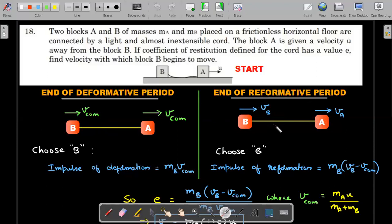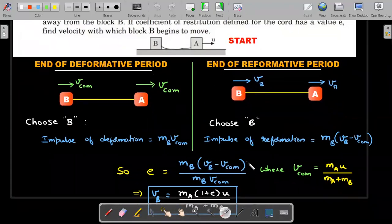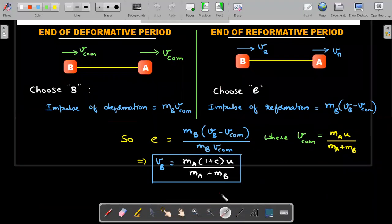Once this happens, we cannot say E equals zero. E will be greater than zero. Choose B again from deformative to reformative period and ask how much reformation impulse it felt. MB into VB minus VCOM. This ratio is the coefficient of restitution of this string. We already know that VCOM is M1U1 plus M2U2 divided by M1 plus M2, which in this problem is simply MA times u over MA plus MB. Just substitute this VCOM and rearrange.